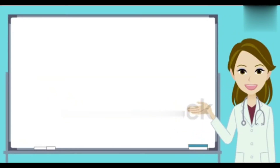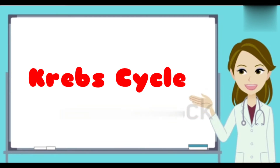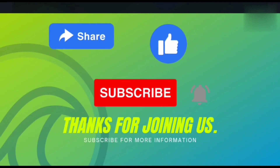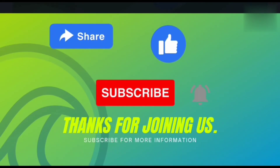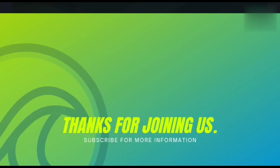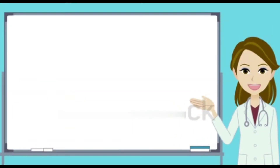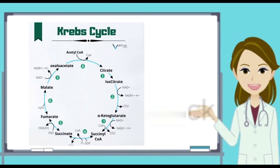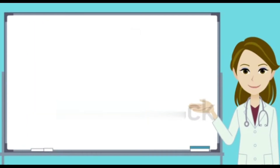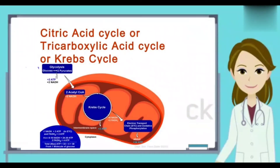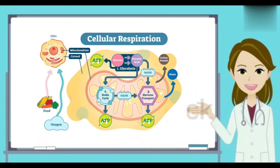Welcome to another video of Mero Medics. In this video we are going to talk about the Krebs cycle. The Krebs cycle is the second stage of cellular respiration. It is also known by three other names: the tricarboxylic acid cycle, the TCA cycle, and the citric acid cycle.